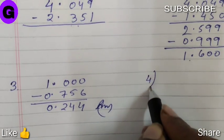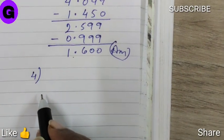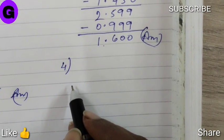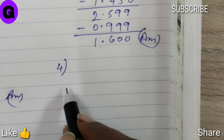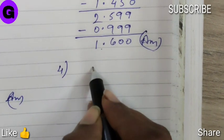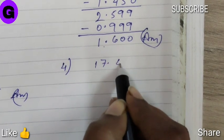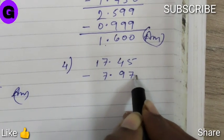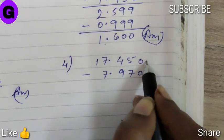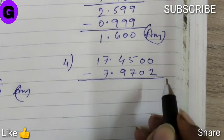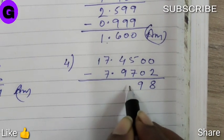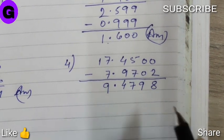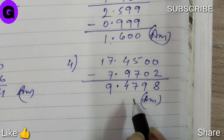Sum number 4. By how much should 17.45 be decreased to get 7.9702. So here it is a simple subtraction. So 17.5 minus 7.9702. So the answer is 9.4798.